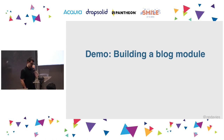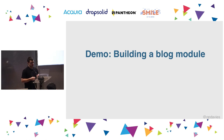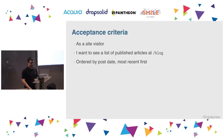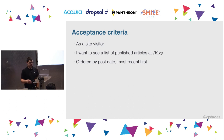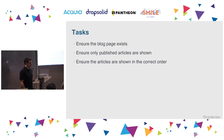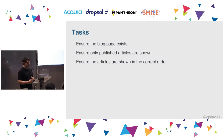Now a demo. It's a short simplified example — probably something I'd use Views for in a real situation, but for this example I'll do it with custom code. The acceptance criteria: as a visitor, I want to see a list of articles on a page at /blog, sorted by post date with the most recent at the top. My tasks: make sure the blog page exists, make sure only published articles are shown, and ensure they're shown in the correct order.